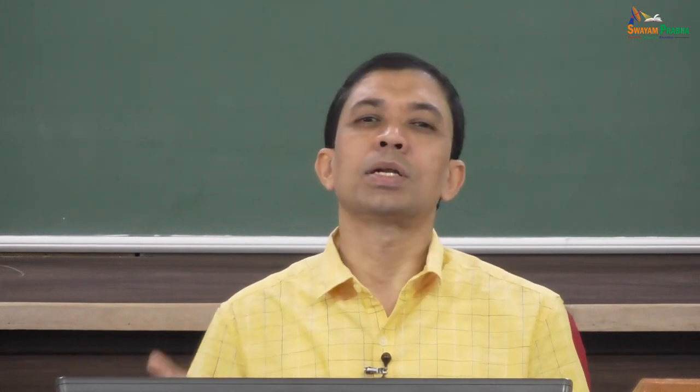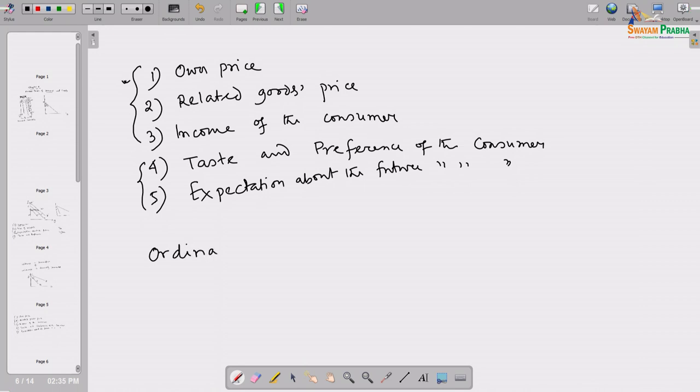Starting with own price: what is my quantity demanded of a commodity vis-à-vis its own price? Under the ceteris paribus condition — the law of demand — if price increases I will try to consume less, and vice versa. In the usual case, if price moves in one direction, quantity demanded moves in the opposite direction. A commodity for which that is true is called an ordinary good or ordinary commodity.